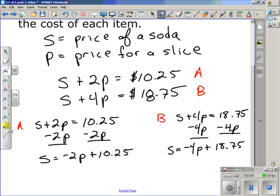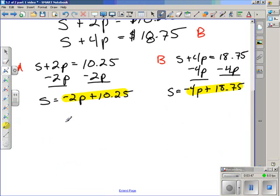The key thing to see here is that both equations have S equals. So S is equal to this and S is equal to this. So what we can do is take these sections of the equations that are highlighted and set them equal to each other because they are both equal to S. So that would give us the equation the opposite of 2P plus $10.25 is equal to the opposite of 4P plus $18.75.